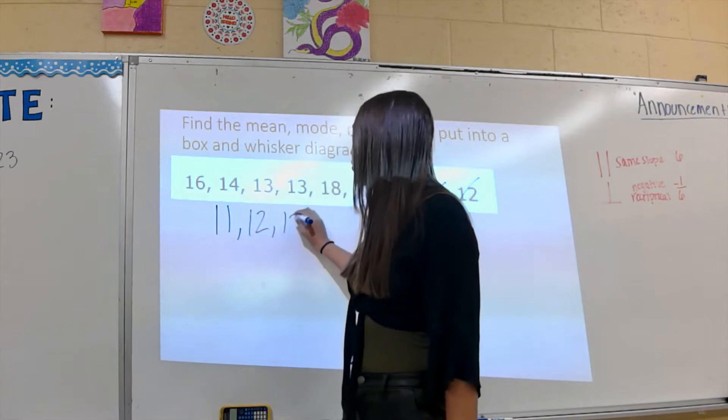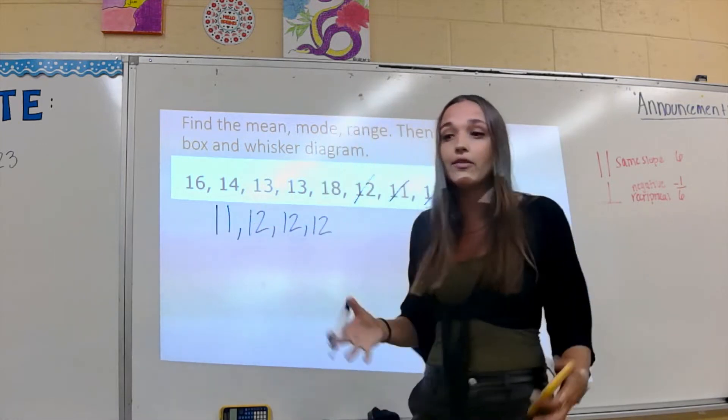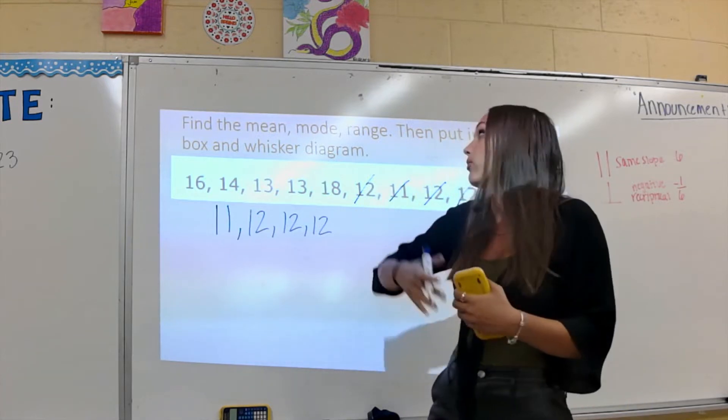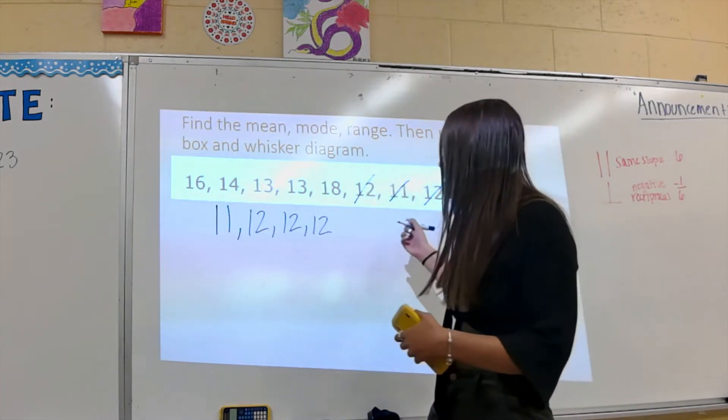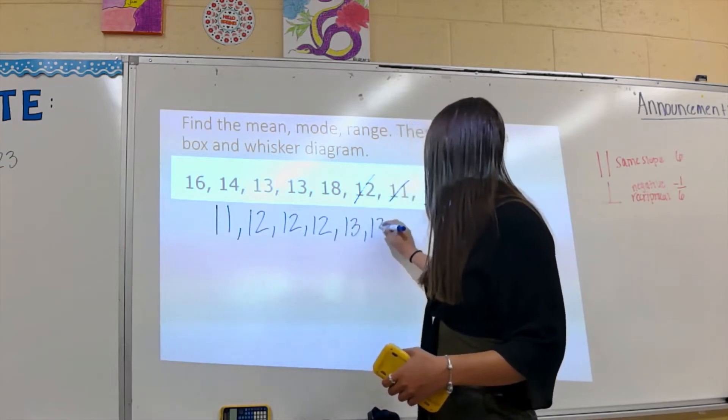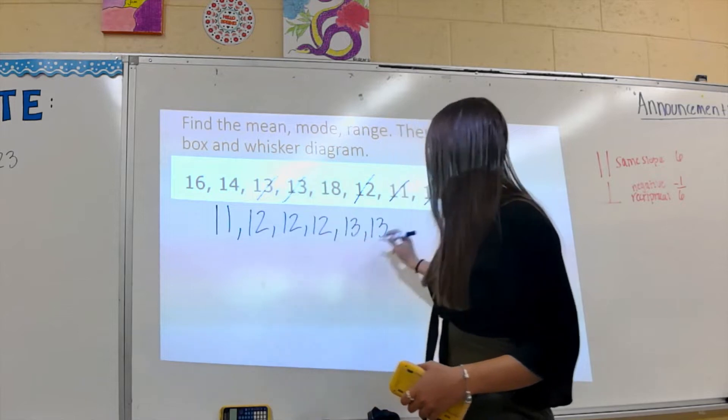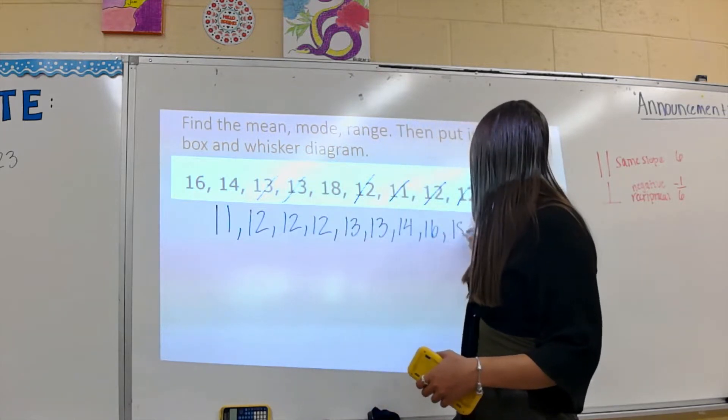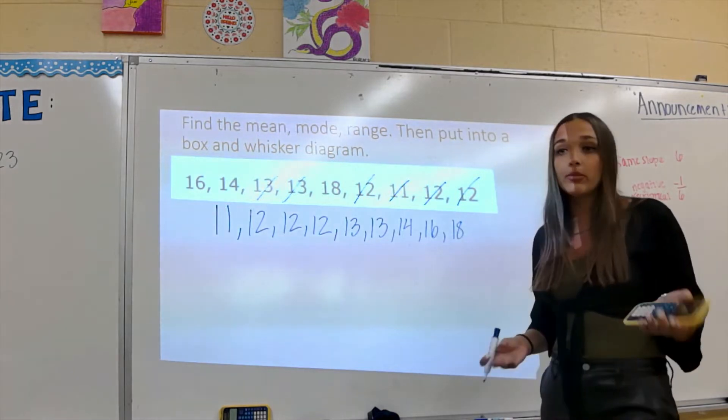I have to write down each 12. Some of us forget to write every single one down and that causes problems because those data points are very important when we're doing statistics. So now we have next our 13, we have two 13s. I have a 14, I have a 16, and I have an 18. So now I put them in order from least to greatest.